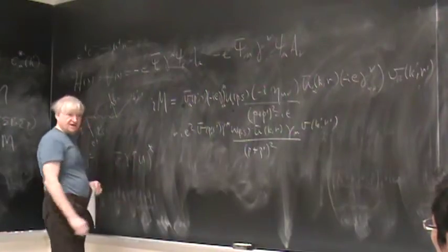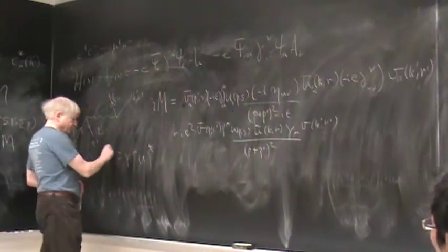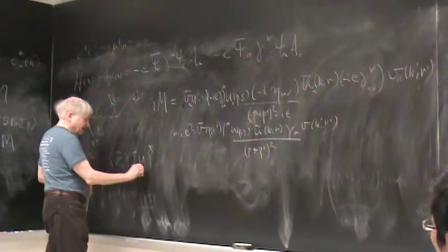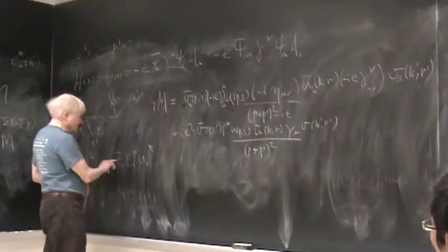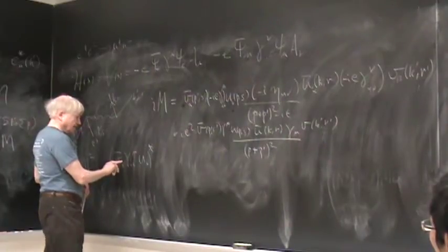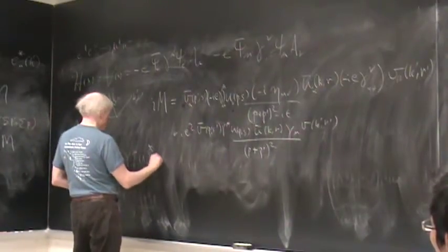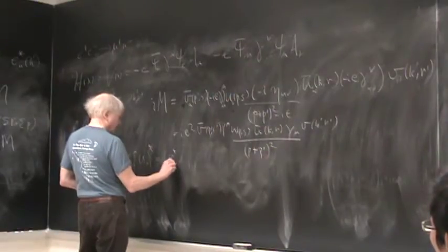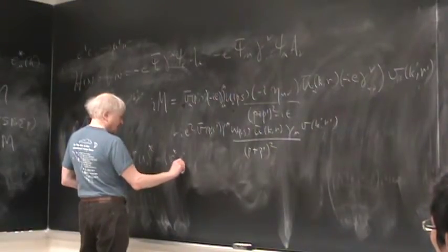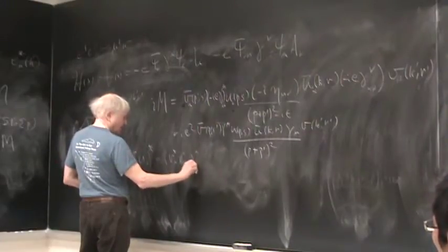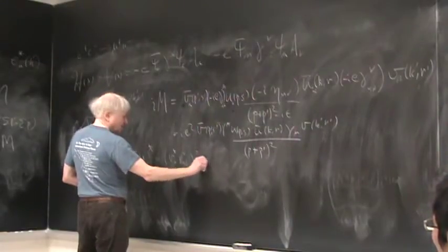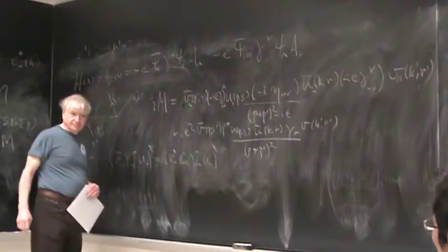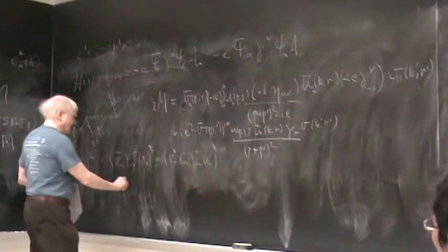So let's see that what we're going to need is |M|². And so we need to know how to deal with something like that. So let's look at something that's v̄ γ^μ u. We're going to need to take the conjugate of that, which of course is a sum over indices.